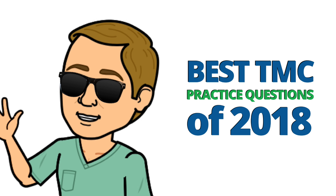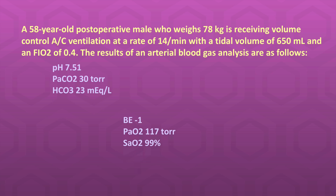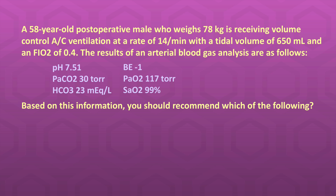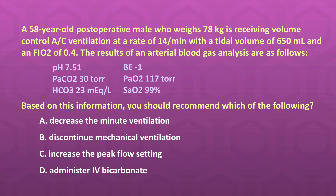Let's kick it off with a question about mechanical ventilation. A 58-year-old post-operative male who weighs 78 kilograms is receiving volume-controlled assist-controlled ventilation at a rate of 14 breaths per minute with a tidal volume of 650 milliliters and an FiO2 of 40%. The ABG results are: pH 7.51, CO2 of 30, bicarb of 23, base excess of -1, PaO2 of 117, and SaO2 of 99%. Based on this information, you should recommend which of the following? A) Decrease the minute ventilation, B) Discontinue mechanical ventilation, C) Increase the peak flow setting, or D) Administer IV bicarbonate. The correct answer is A — decrease the minute ventilation.